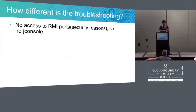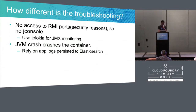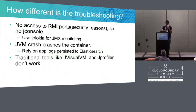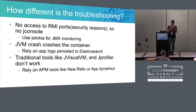How different is troubleshooting in Cloud Foundry? We found some key lessons learned. We didn't have access to RMI ports, so we couldn't use JConsole — we had to use Jolokia to get JMX monitoring running. JVM crashes crash the container entirely and don't let you retrieve any data afterward, so we had to rely on application logs stored in Elasticsearch, which gives limited data. Traditional tools like JVisualVM and JProfiler don't work for troubleshooting, so we rely on APM tools like New Relic, AppDynamics, or Dynatrace to capture as much information as possible before the container crashes, including exceptions logged right before the crash.